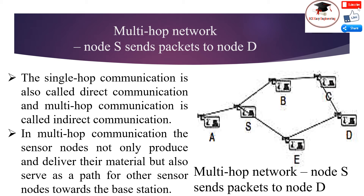Unless the network is disconnected, the packet will eventually reach its destination. Furthermore, as the network topology changes, the packet transmitted follows the new route. To prevent a packet from circulating indefinitely in the network, a hop count field is usually included in the packet. Initially, the hop count is set to approximately the diameter of the network.